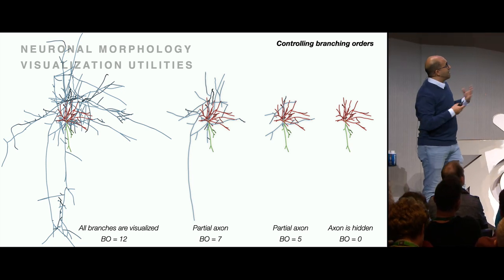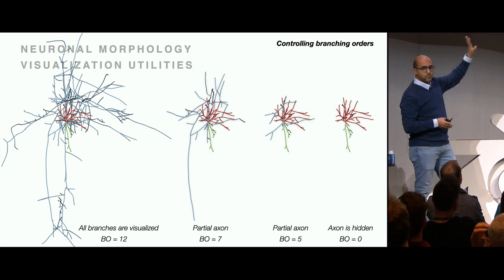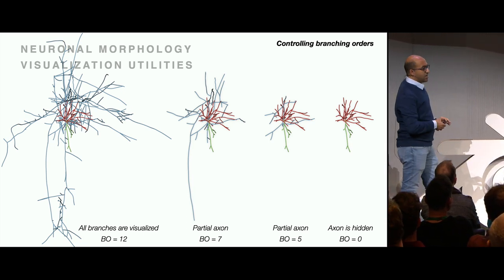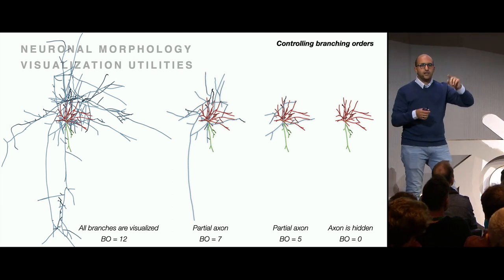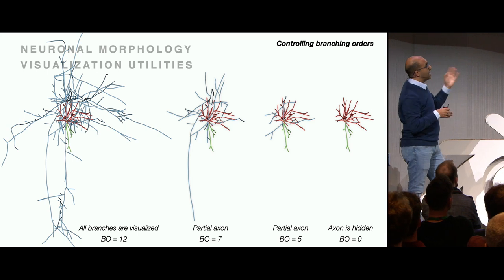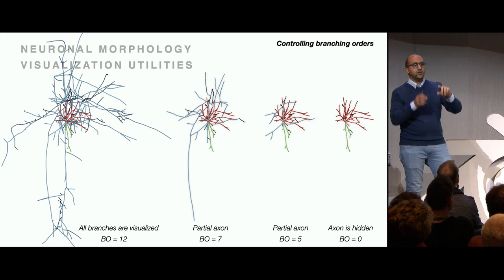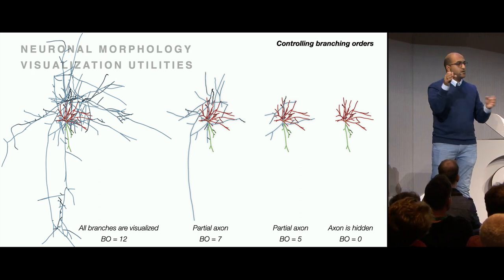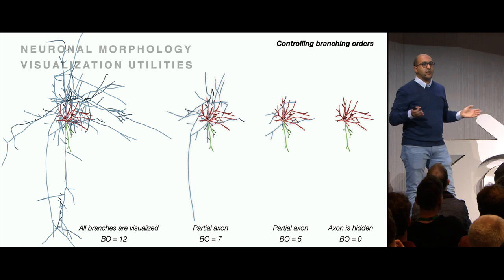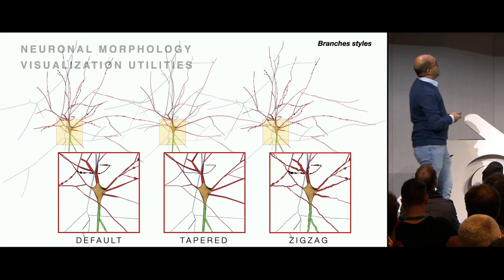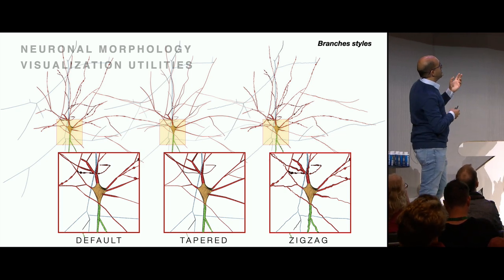Neurons have different types of arbors called axons, apical dendrites, or basal dendrites. Every type of arbor is color-coded by a certain color. Neuroscientists can tick or untick specific types of branches to visualize, and they can change the branching order - important because in certain cases axons are not really needed and you'd like to focus on dendrites, so we have the option to do that.